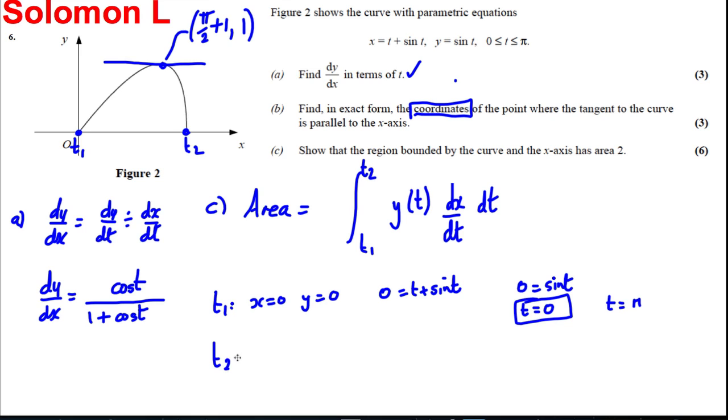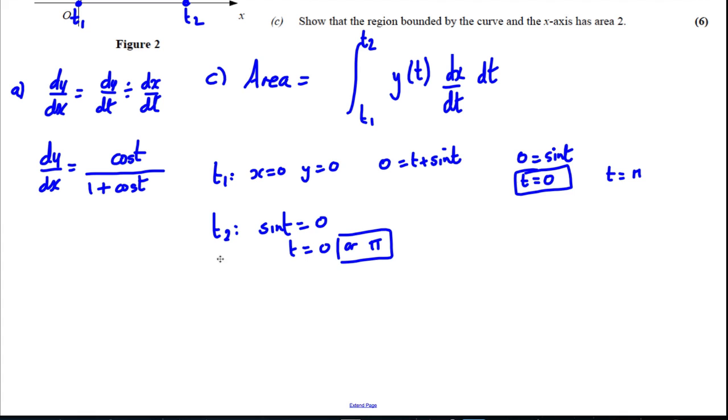And at t2, well, what must be true at t2? We know that y is equal to 0 and x is an unknown. So y is equal to 0. Again, sin t equals 0. t could be 0 or pi. But this time, it's the pi value because t is 0 goes with that one. Okay, so we've got our t1 and our t2.